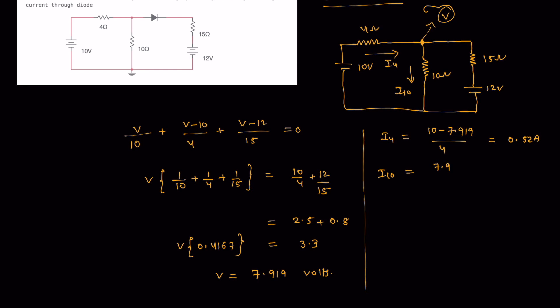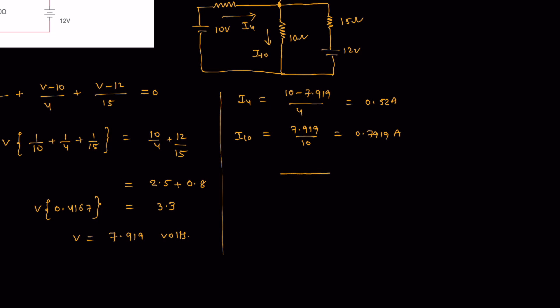At the same time, let's calculate I10, the current flowing through the 10 ohm resistor. That is 7.919/10, which leads to 0.7919 amps. Clearly we can observe one thing: the current I4 is entering this node and current I10 is leaving this node, but surprisingly I10 is greater than I4.